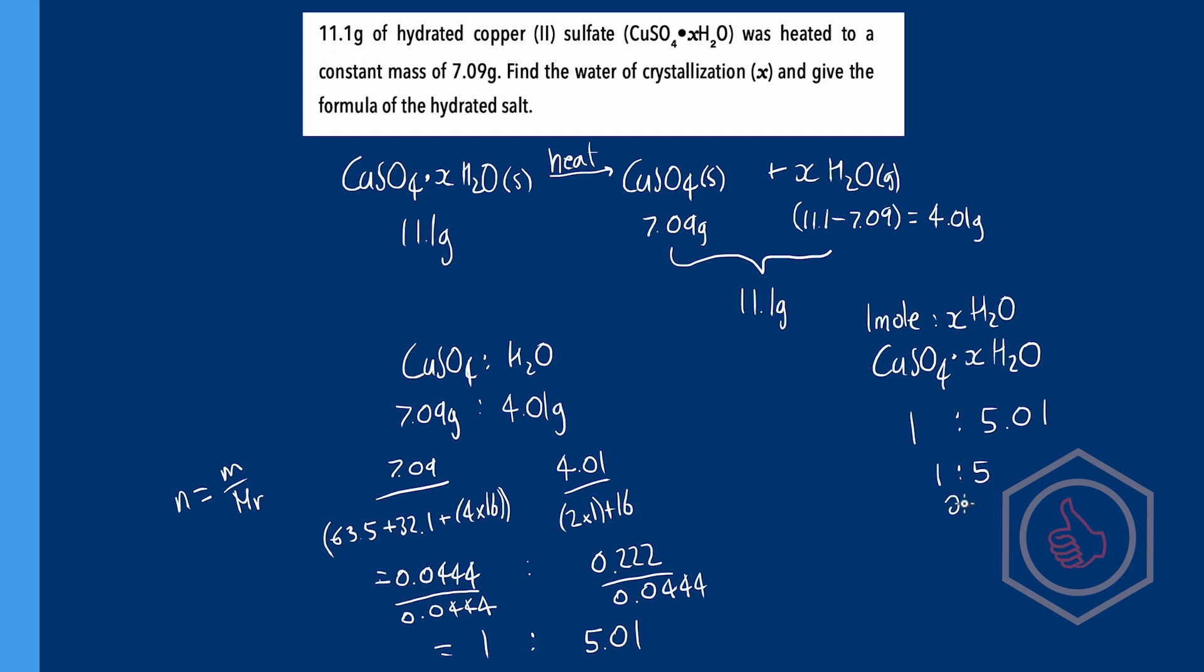This means our x value equals 5 and the formula of our hydrated copper sulfate is CuSO4·5H2O.